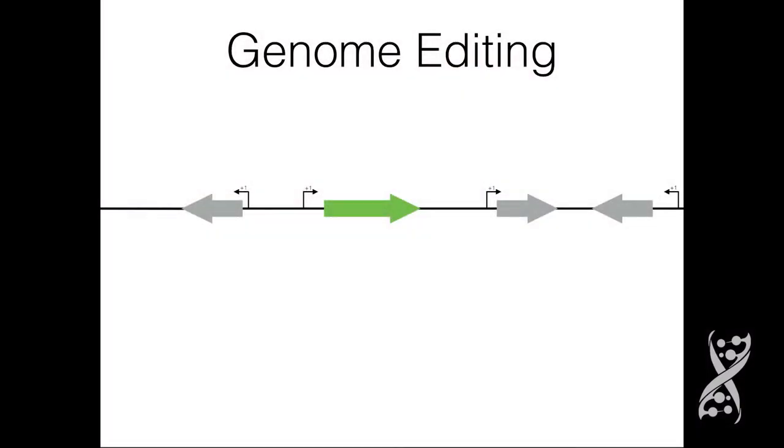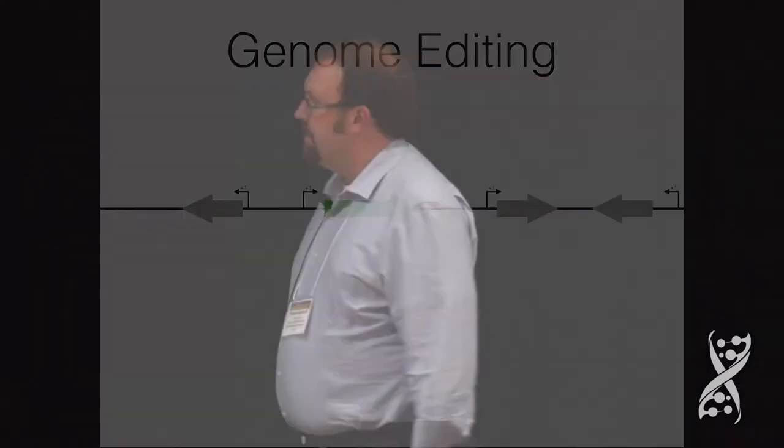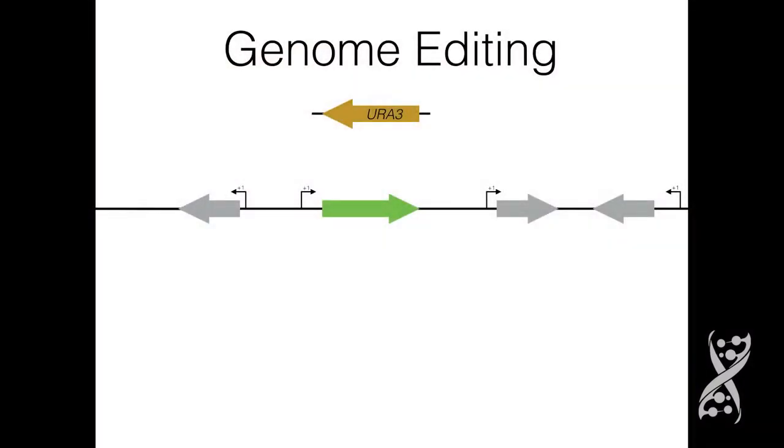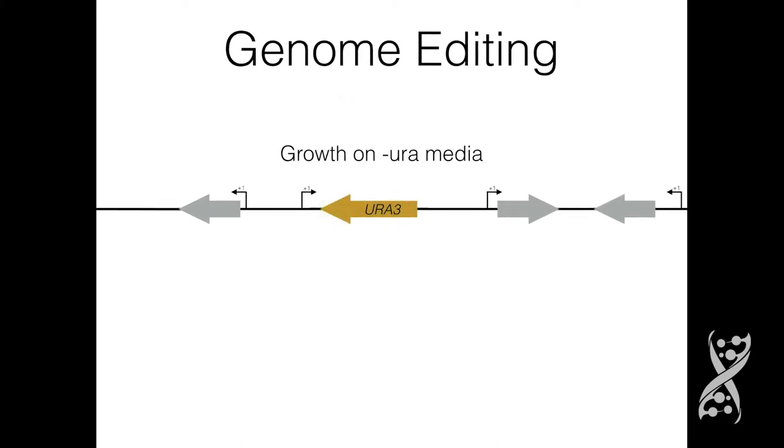In Saccharomyces cerevisiae, there have been forms of genome editing happening in that species for, by some accounts, 20 to 30 years. A lot of that early genomic engineering was done with the URA3 system and what is called the delete-then-replace method. Here is a cartoon of the genomic region of interest with a gene of interest outlined in green. The URA3-based system involved taking the URA3 gene and using it to knock out your gene of interest and select for that replacement on media that lacked uracil. Cells with URA3 are able to synthesize uracil and so they're able to grow in this minimal media.